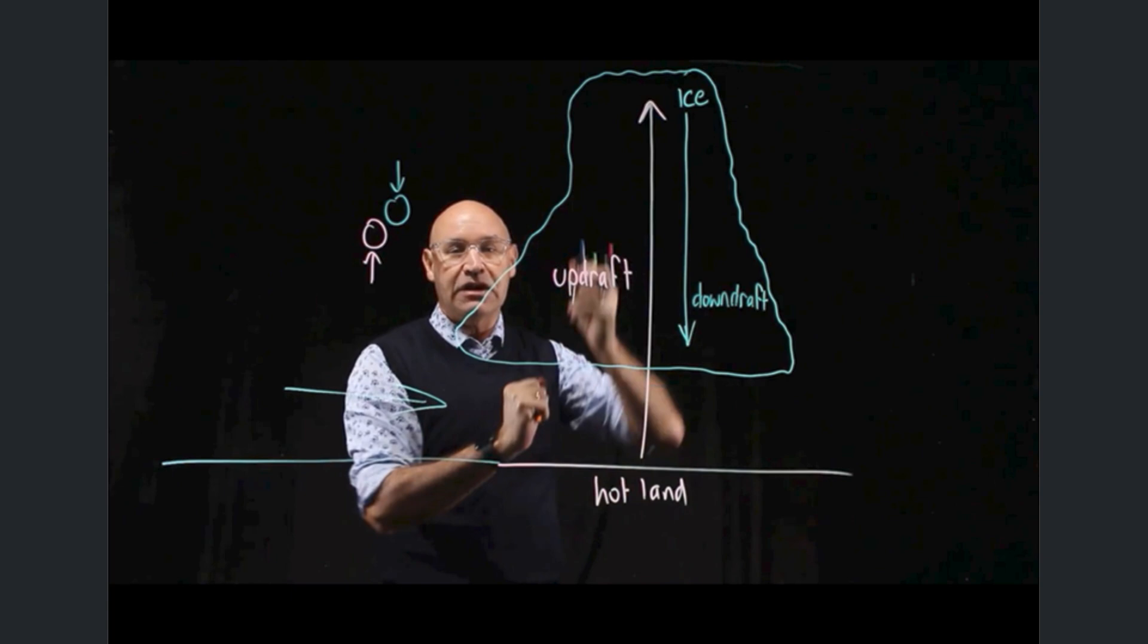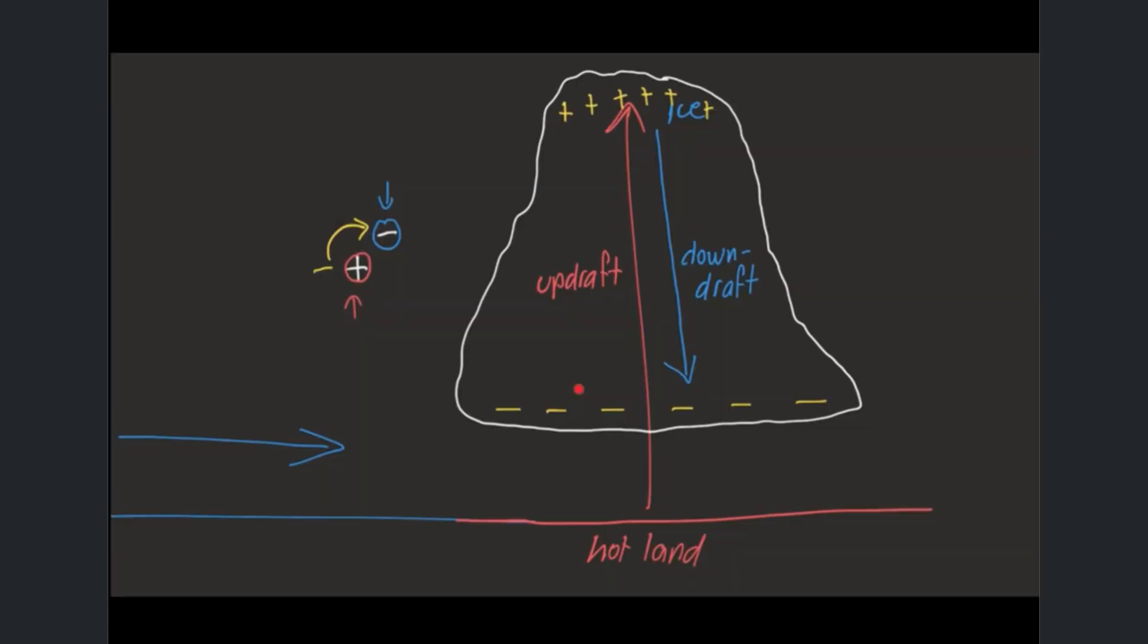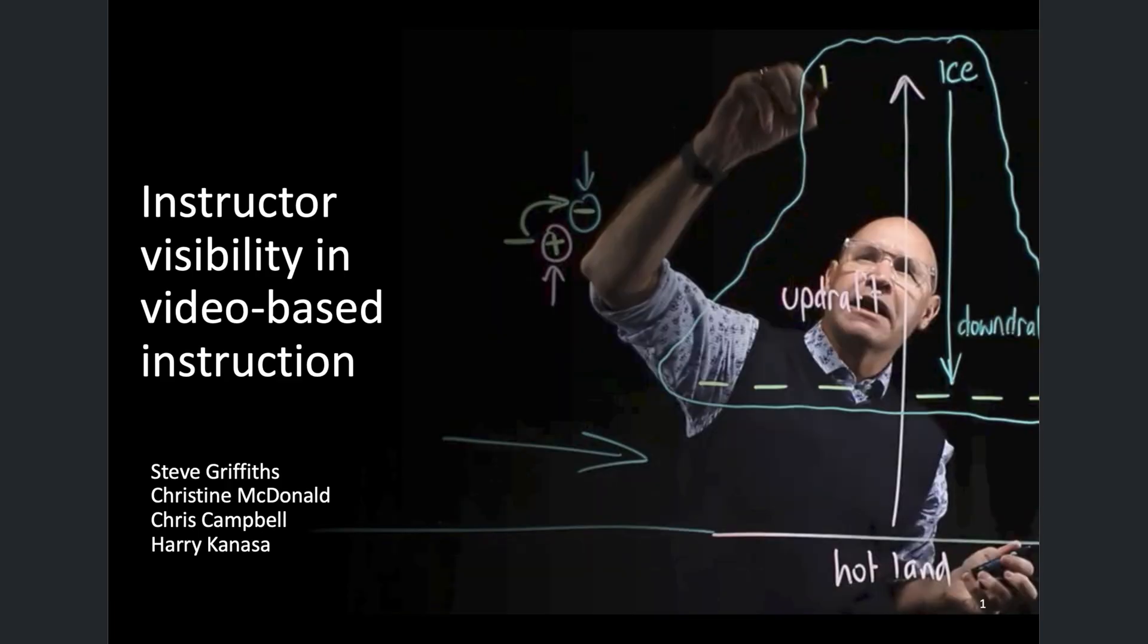One group saw the instructor explaining the concepts and they were working on a transparent white board so you could actually see them working through it. The other group got the same explanations, the same content, but all they saw was a digital board. No instructor, just the information appearing. So what happened? Did the students who saw the instructor just ace the test? That's where it gets really interesting.